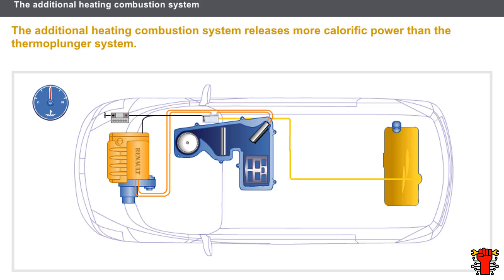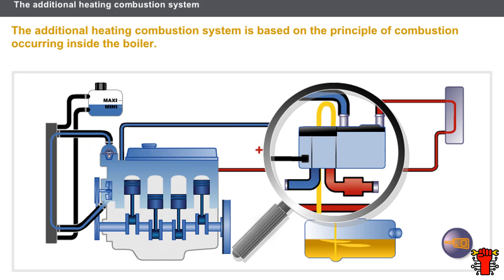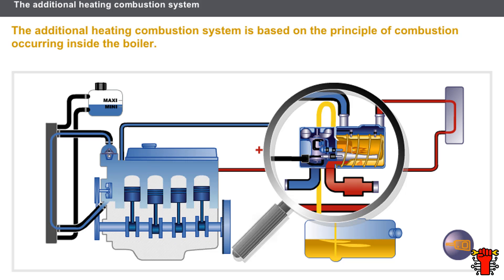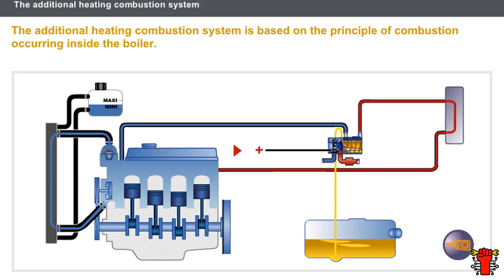The additional heating combustion system is mainly comprised of a boiler, a combustible fuel supply circuit, and an electrical circuit. The system is based on the principle of combustion occurring inside the boiler. The fuel used comes from a pipe connected to the vehicle's fuel tank. The oxidizer is the air brought in via a pipe connected to the outside. The coolant enters the boiler cold, is heated on contact with the heat exchanger, and comes out hot. The circulation of the coolant is ensured by the engine coolant pump. The system requires an electrical supply for the boiler to operate and be managed.